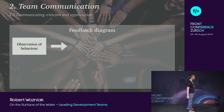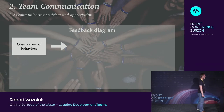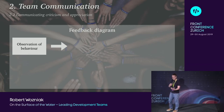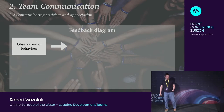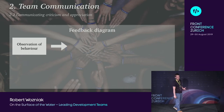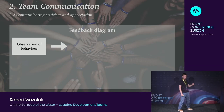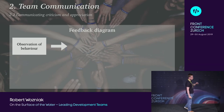The second part of team communication is communicating criticism and appreciation. We have a feedback diagram to help you prepare for face-to-face feedback with a team member. The first step is observation of behavior — before the feedback session, observe the person's behaviors and take notes in your personal notebook: what you've noticed, what they've done.